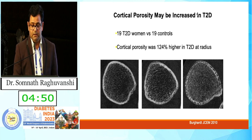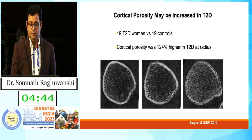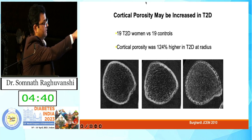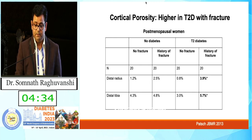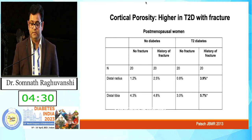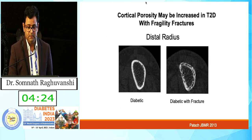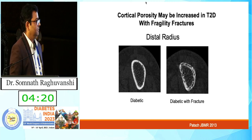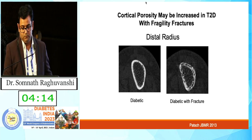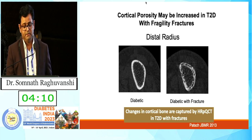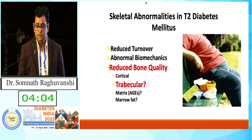Pictures show increased cortical porosity in patients with type 2 diabetes. We can see the periphery in the cortex is reduced in mineralization. There is almost 2 to 3% difference in mineralization, and higher fracture risk at the radius in type 2 diabetes. Patients with diabetes and fragile fractures have reduced cortical bone density and reduced trabecular bone density. Changes in cortical bone are captured by high-resolution peripheral CT, showing reduced bone mineralization.